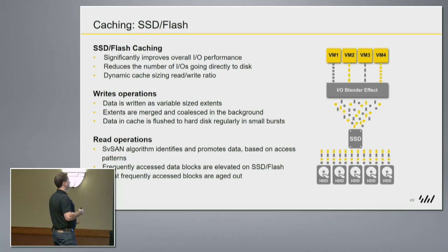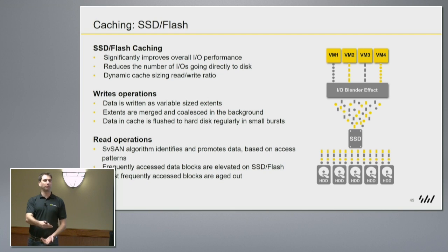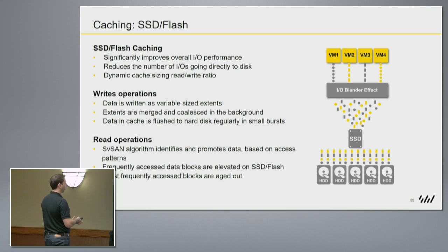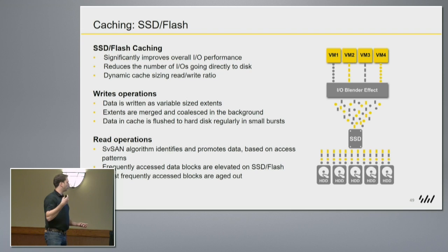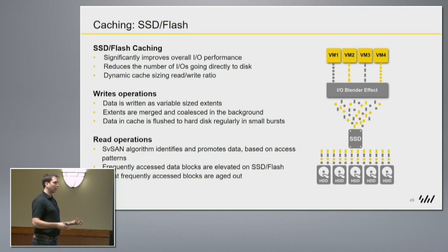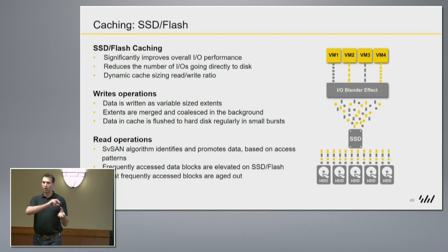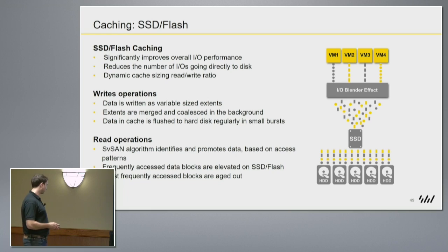What vendors do is combat that IO Blender effect by introducing flash medium in front of the spinning disk. This essentially gives you the performance of SSD flash medium while still having high capacity on the back end by using lower-cost drives — the best of both worlds: the hybrid model. Virtual machines' write operations hit our SSD first, giving you the low latency response time you'd expect. The SSD and the software take ownership of that, look at the data pattern, and line it out as efficiently as possible so that when it writes to disk, those disks don't have to move as much.